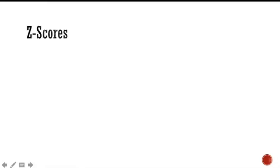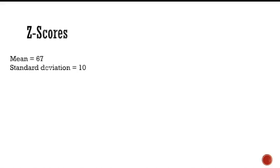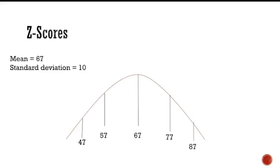An aptitude test was randomly given to a college class of all freshmen with a mean of 67 and a standard deviation of 10. Determine how many freshmen scored less than 43. After drawing the normal curve, a score of 43 falls less than two standard deviations away from the mean.